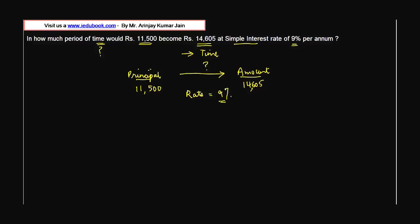We know that Simple Interest = (Principal × Rate × Time) / 100. We know the principal and the rate, but we don't know the time or the simple interest. However, since we know the amount and the principal, we can use: Amount = Simple Interest + Principal.